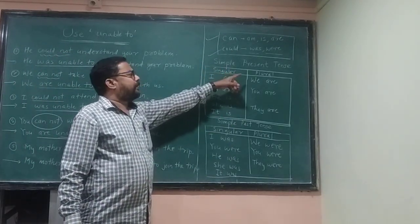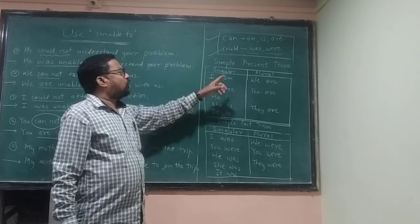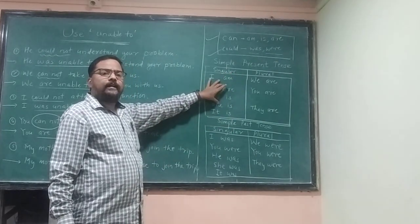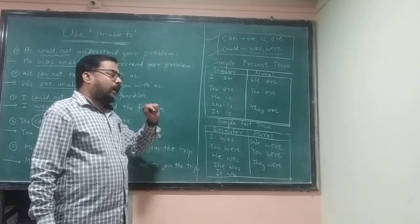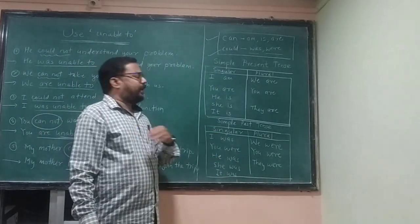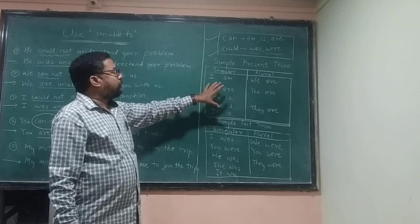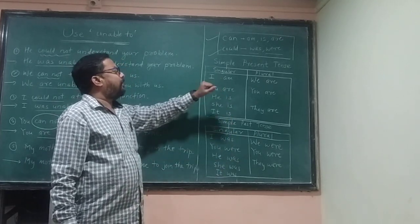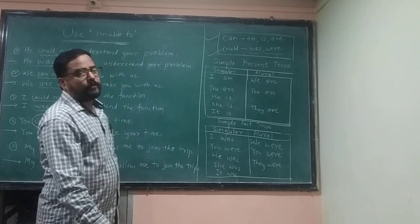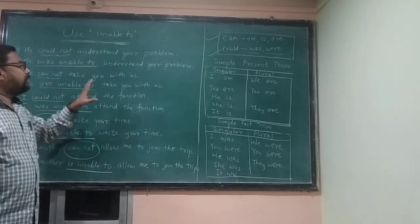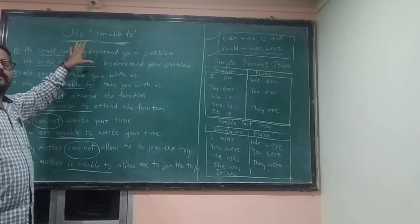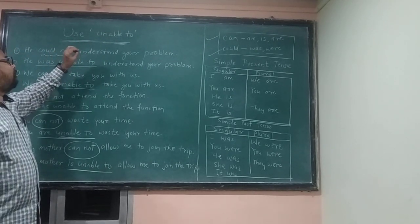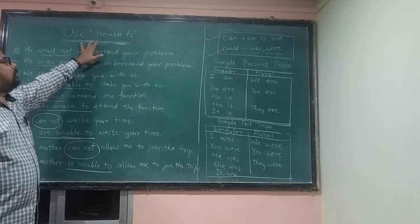In simple present tense we use 'am,' 'is,' or 'are,' and in past tense we use 'was' or 'were' before 'unable to.' If you learn this table and follow these simple rules, you can use 'unable to' properly.